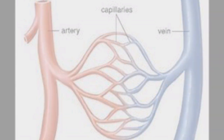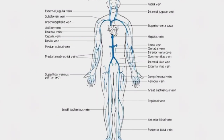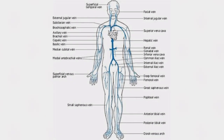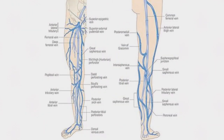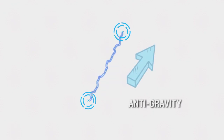Veins are blood vessels that carry deoxygenated blood from all over the body to the heart through the venous system. The blood in the veins of the lower limb has much more pressure than in the veins of the upper limb, because the lower limb veins must carry blood from the deeper and lower parts of the body upward and against gravity.